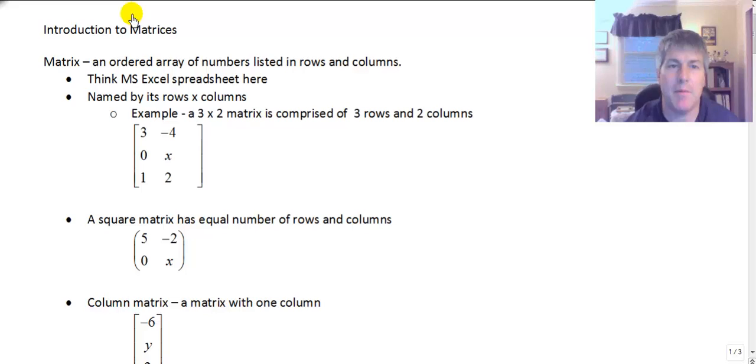So this particular matrix would be a three by two matrix because it has three rows and two vertical columns. We can also name a matrix as well. We might say that that matrix is matrix A but it is a three by two matrix. This matrix would be a two by two matrix or a square matrix. A square matrix has an equal number of rows and columns. Its elements 5, negative 2, 0, and x.